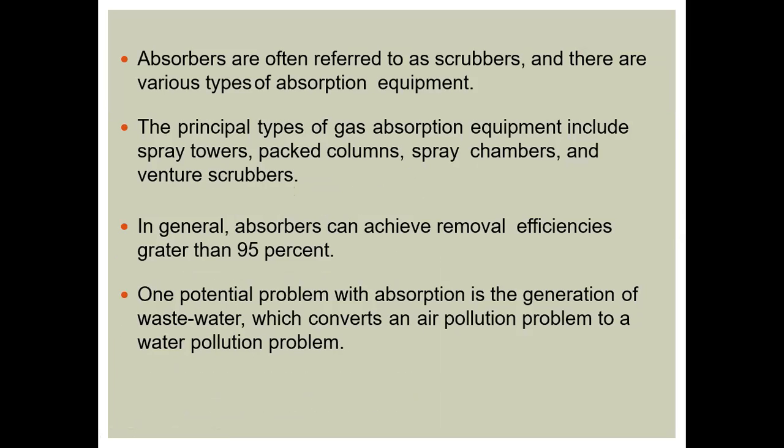Absorbers are often referred to as scrubbers. The principal types of absorption equipment include spray towers, packed columns, spray chambers, and venturi scrubbers. In general, absorption can achieve removal efficiency greater than 95 percent. One potential problem with absorption is the generation of wastewater, which converts an air pollution problem into a water pollution problem. This is the main disadvantage of the absorption technique.